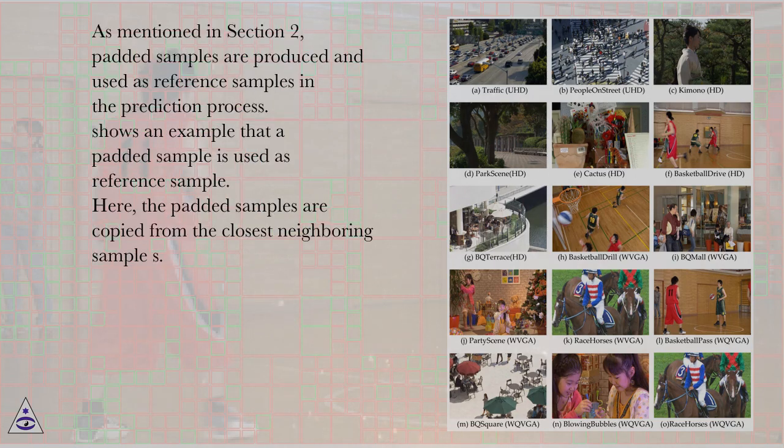As mentioned in Section 2, padded samples are produced and used as reference samples in the prediction process. This shows an example that a padded sample is used as a reference sample. Here, the padded samples are copied from the closest neighboring sample.